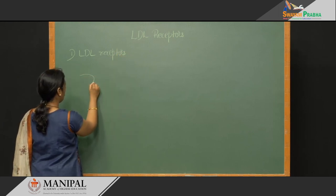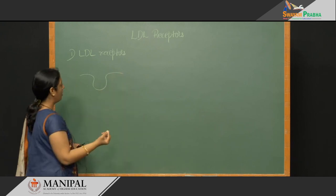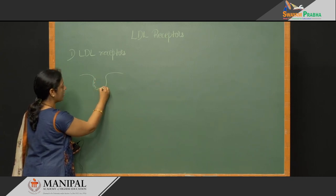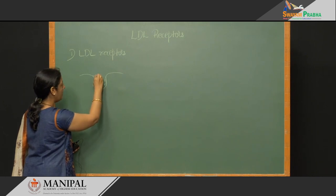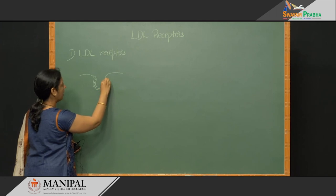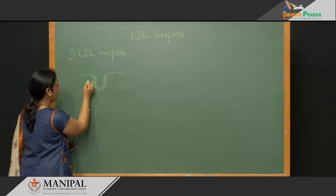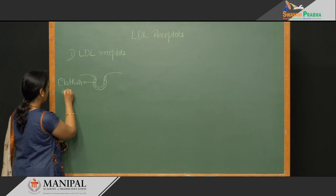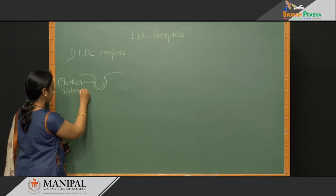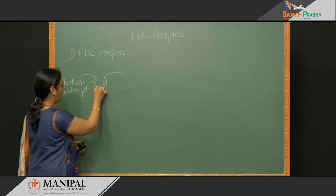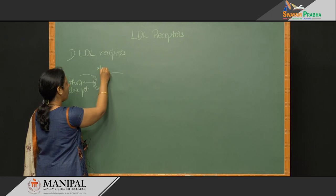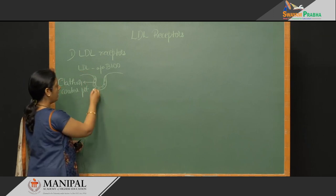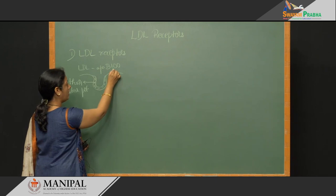LDL receptors are present on almost all cells. These receptors are coated with a specific protein called clathrin. These clathrin-coated pits recognize the ApoB-100 of LDL. So whenever there is LDL in the blood circulation, the receptor recognizes the ApoB-100 of the LDL.